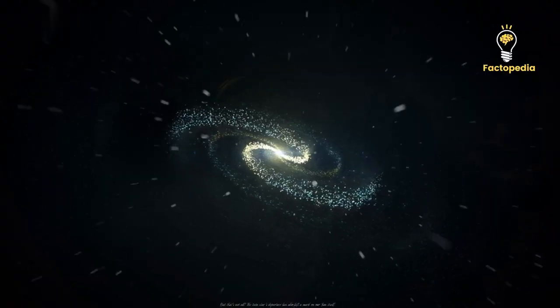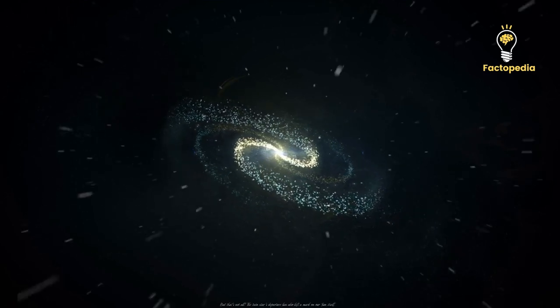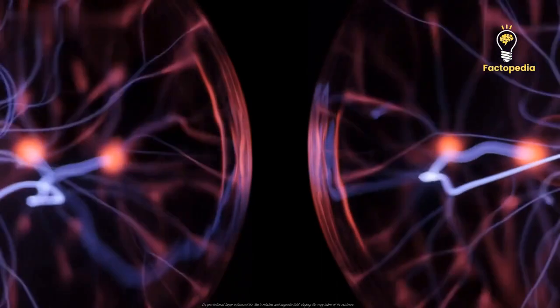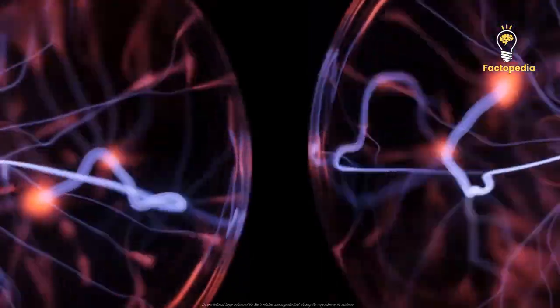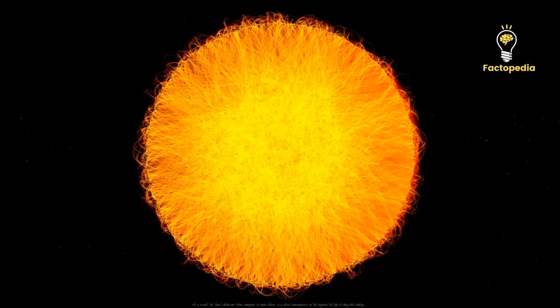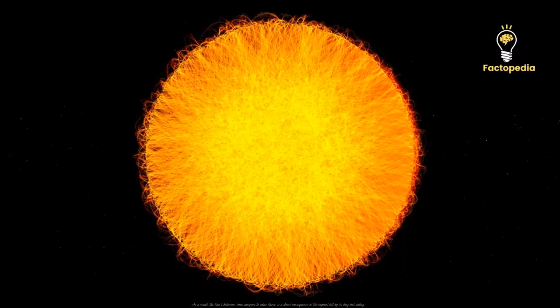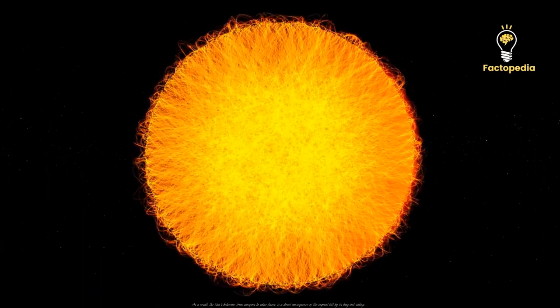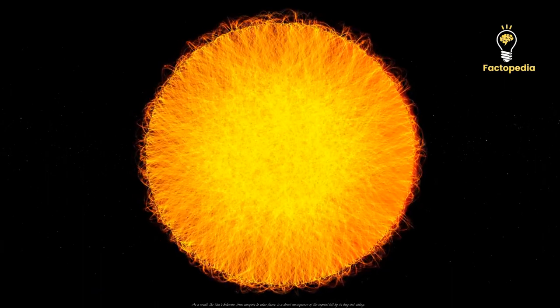But that's not all. The twin star's departure has also left a mark on our sun itself. Its gravitational tango influenced the sun's rotation and magnetic field, shaping the very fabric of its existence. As a result, the sun's behavior, from sunspots to solar flares, is a direct consequence of the imprint left by its long-lost sibling.